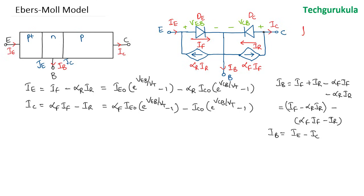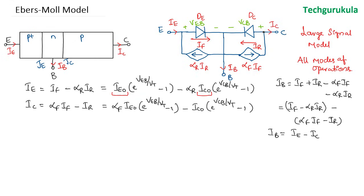This is a large signal model and it is valid in all modes of operation. I_E0 here is the leakage current through the emitter junction and I_C0 is the leakage current through the collector junction. To understand what these terms equal in terms of device parameters, let's find out what I_E and I_C are in the active region of operation, since we derived these equations in the previous video. Let's correlate with them to find these quantities.